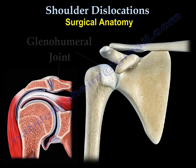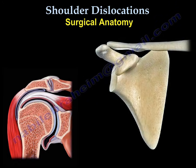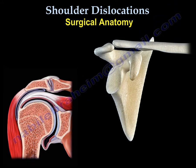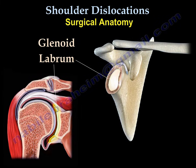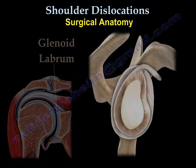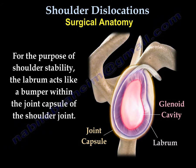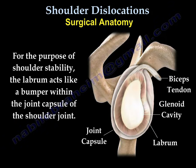Shoulder dislocation is dislocation of the glenohumeral joint. You can see the glenoid cavity as a part of the scapula, and the labrum is attached to the glenoid. The labrum reinforces the glenoid cavity and acts as a bumper within the joint capsule of the shoulder joint.